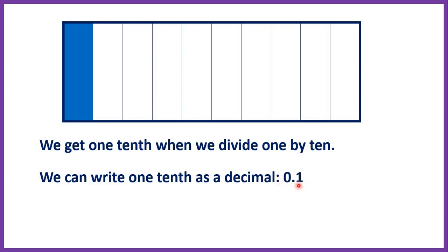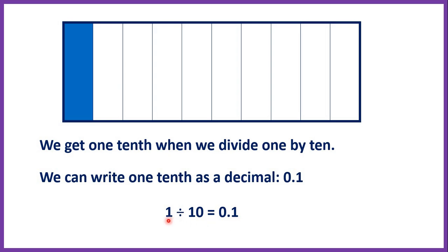The digit after the decimal point is the tenths digit. What we've shown here is that one divided by ten equals 0.1, or one whole divided by ten is one tenth.